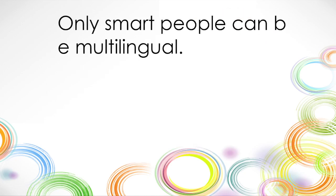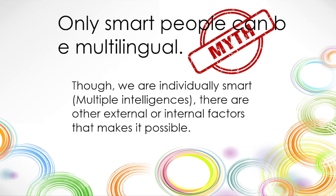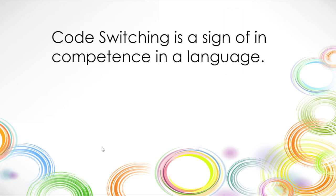Myth three: only smart people can be multilingual. On the surface it might seem so, but it's a myth because we can always train our brain to learn another language. When we are in a situation where we need to learn a language, it becomes a primitive survival skill. According to the multiple intelligences theory, there are other external and internal factors involved, and we are all individually smart in different ways.